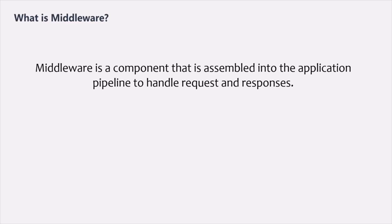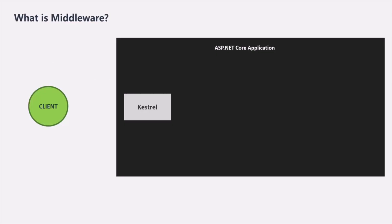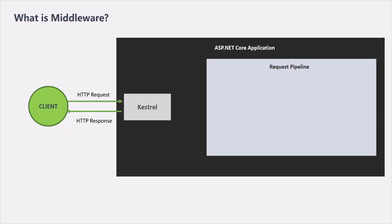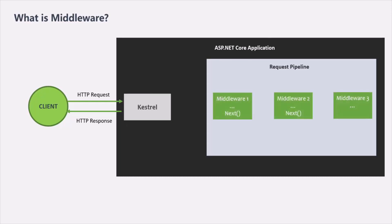Let's understand middleware with a simple example. Say we have an ASP.NET Core application running on a Kestrel server. Whenever a client makes a request, the server receives it, processes it, and sends the response. In between the request is received and the response is sent, there is a request pipeline. In this pipeline, before sending the response, the request and response can be manipulated using middleware.